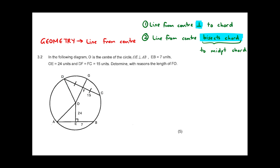Let's go ahead and answer the question. Whenever we're dealing with Euclidean geometry, our goal is to read and analyze the question properly to create that geometric understanding. We read: O is the center of the circle. The moment you read 'center,' apply every center theorem you have — at this point, line from center perpendicular to chord, and line from center bisects chord. Going forward there are more theorems involving the center.